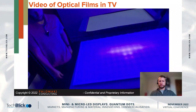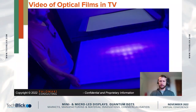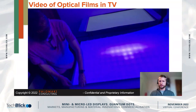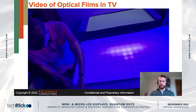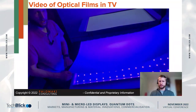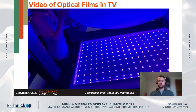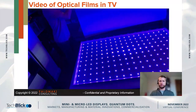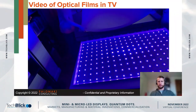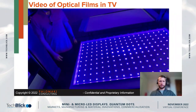And then finally, you can see here a full array local dimming backlight. This is a backlight with, I believe, 96 different LEDs or 96 zones. This is the plastic diffuser — a much more rigid part — and then we have this array of LEDs in the back of the unit.